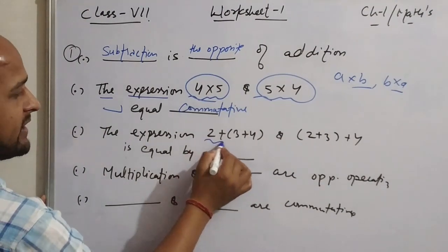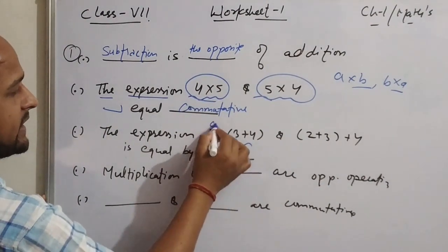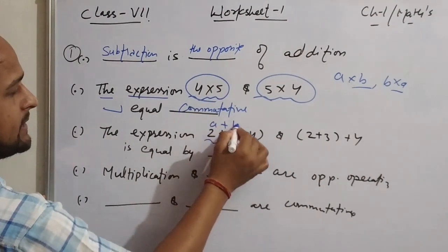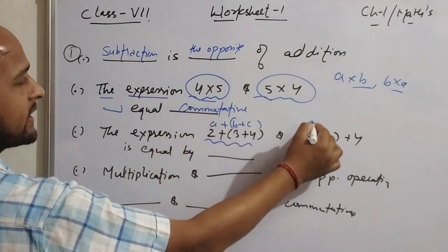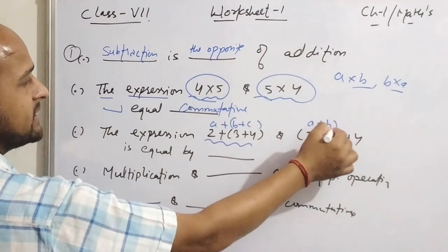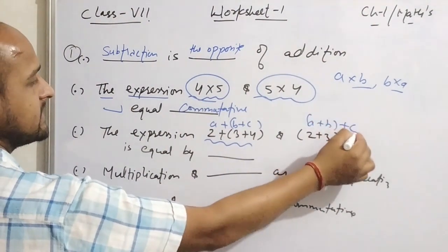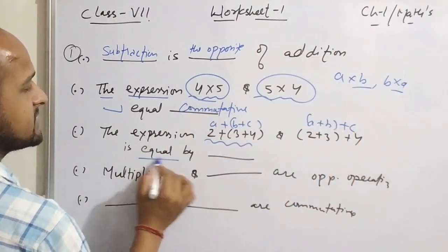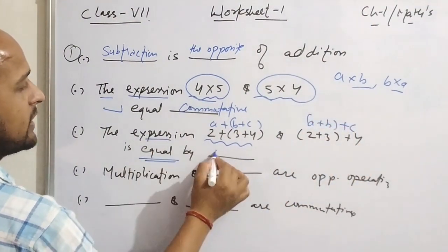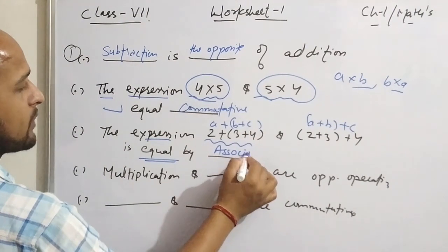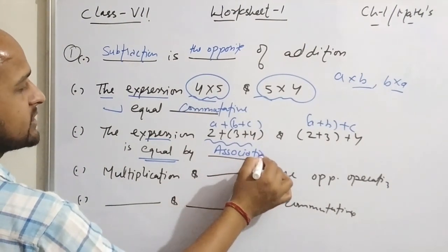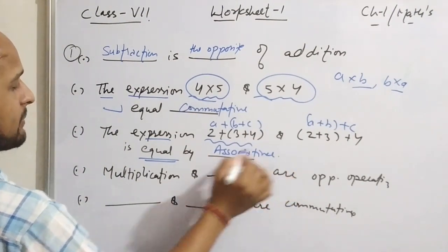The next one: when we have 3 terms — a + (b + c) and (a + b) + c — this is equal by the associative property. So the answer is associative property.